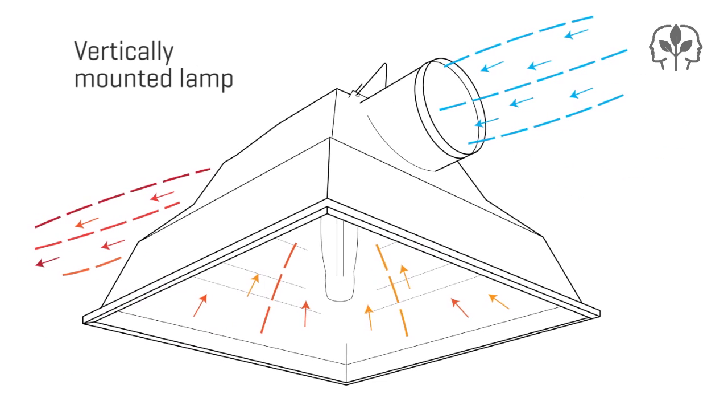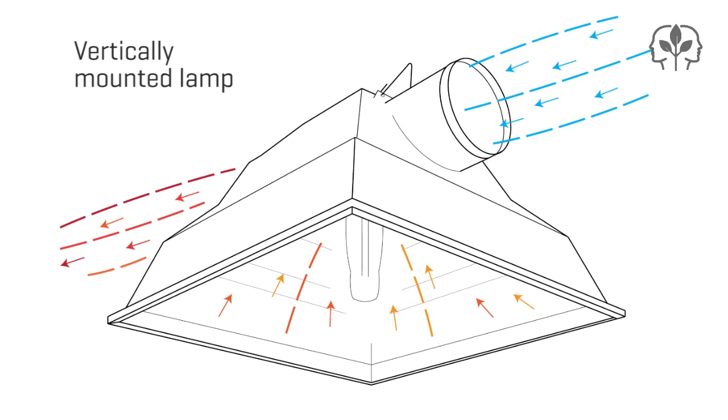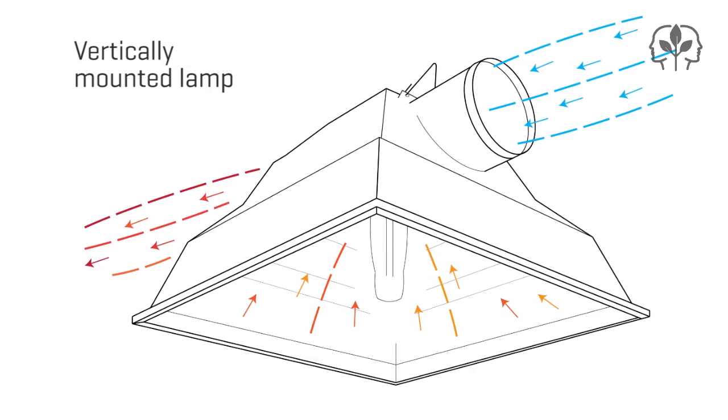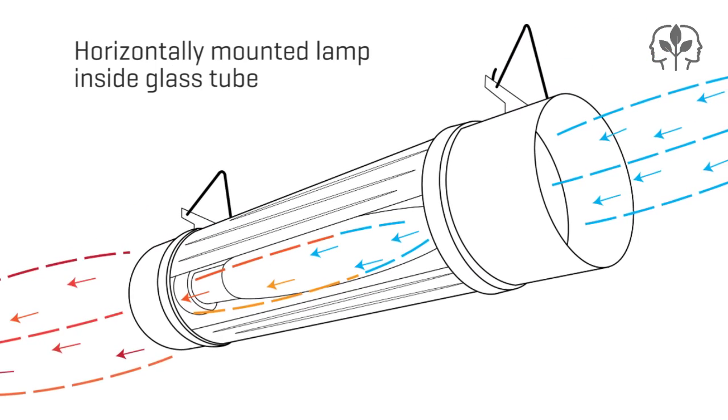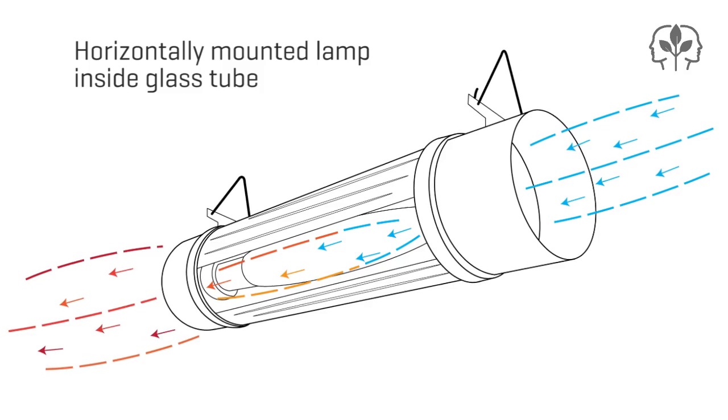Some designs are based on a vertically-mounted lamp. In both cases, the central principle is the same. Use a constant flow of air to move heat from the lamp and reflector to get it out of your indoor garden.